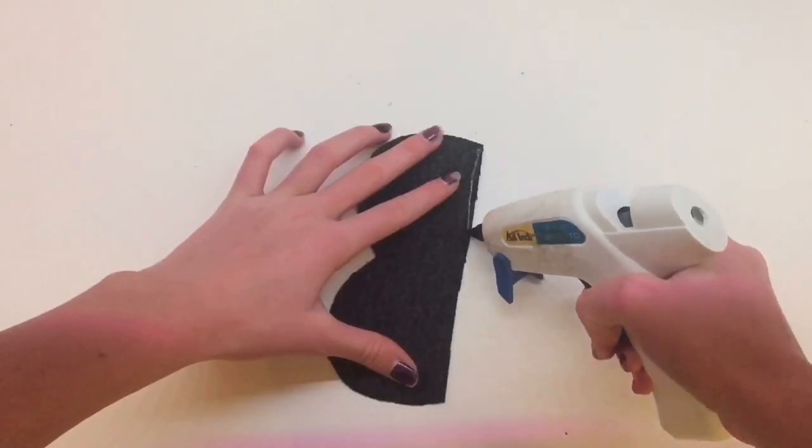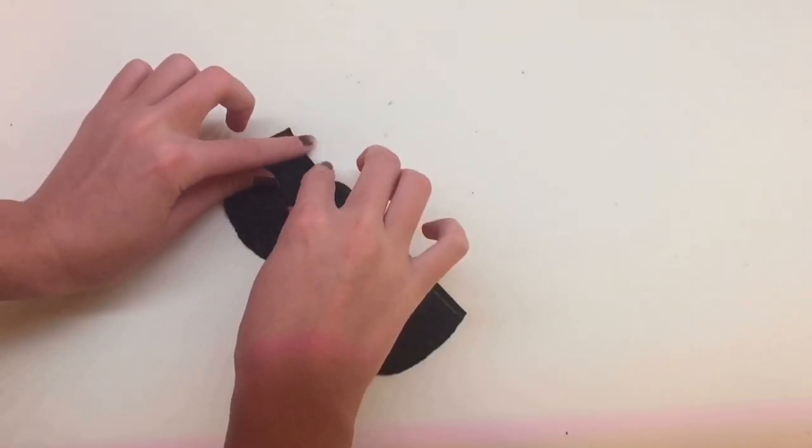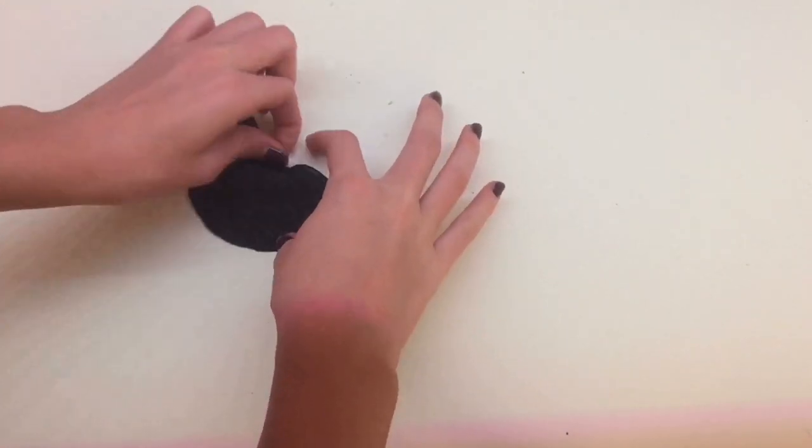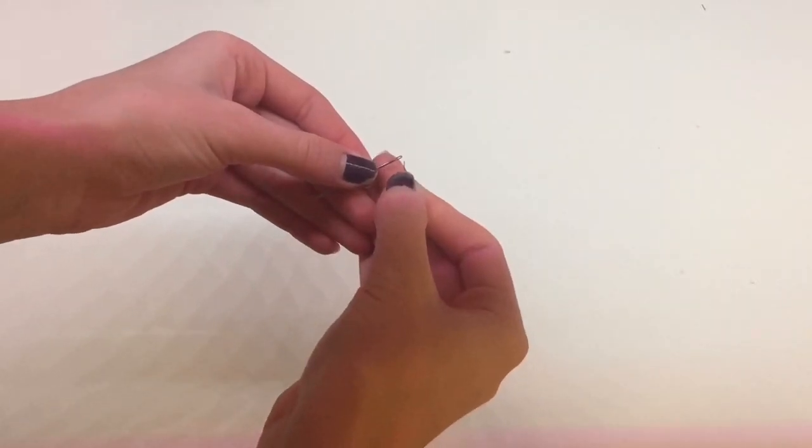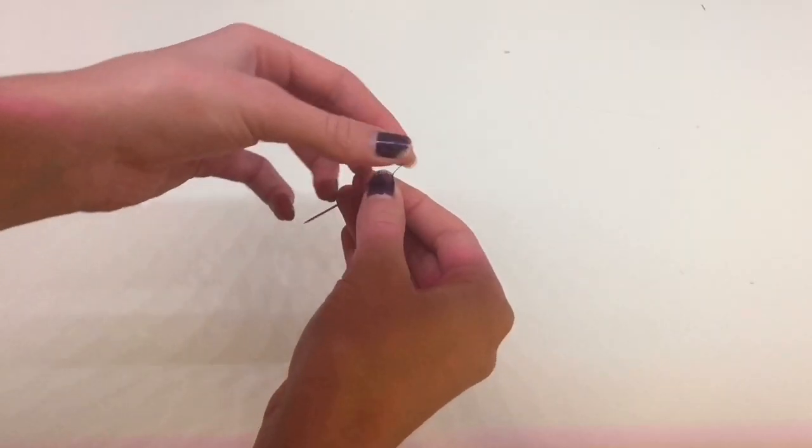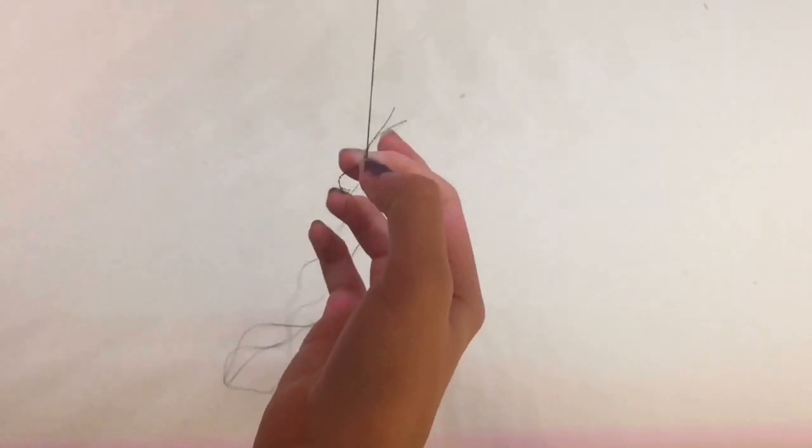With the bad side facing up, I glue over that straight edge. Now I thread a needle with some black thread and knot the end.